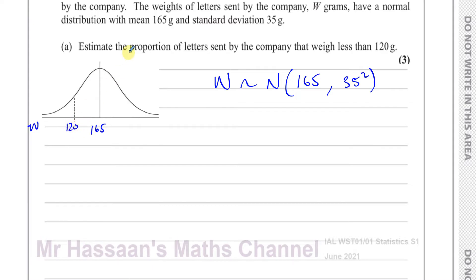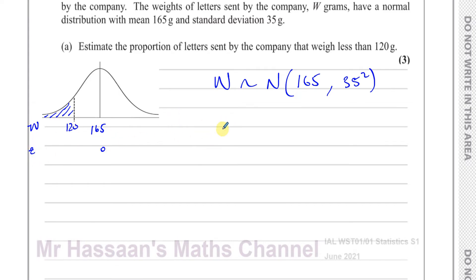We want to find the proportion of letters that weigh less than 120 grams — that's the area to the left of 120 on the bell curve. To do this, we need to find the Z values. The Z value for the mean is zero, and we need to find how many standard deviations 120 grams is below the mean using standardization.